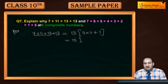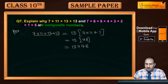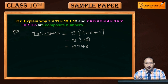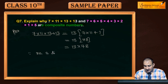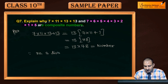7×11 = 77, और 77 + 1 = 78। तो यह number nothing but the product of 13×78 है। अब यह number 13 से भी divide हो रहा है और 78 से भी divide होगा। Since the number obtained after this product, number is divisible by 13.